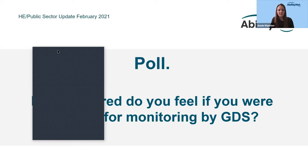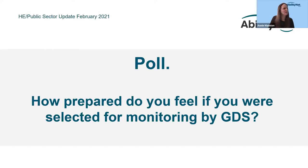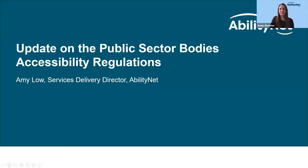I'm going to end the poll now and share the results. Nobody is very confident — no one said they've really embedded this into their practices and are striving for ongoing excellence. The next category, quite confident — we had an audit and got statements published in time — that's 32% of you. Not that confident is the biggest chunk at 57%, saying we did some work but aren't sure how joined up across the institution it was. And 12% say they're really concerned there'd be significant issues found. I'll now hand over to Amy who'll share further information about the GDS monitoring results.